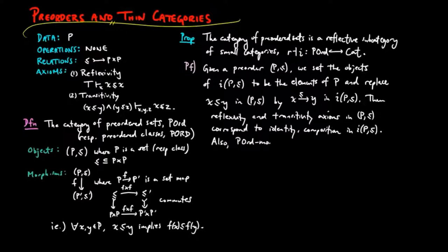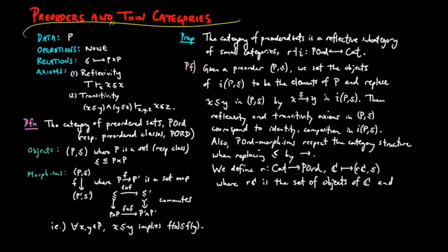Also, the pre-ordered morphisms respect the category structure when replacing the relations by morphisms. We define the reflector R where RC is a set of objects in C and x is defined to be less than or equal to y if and only if there is a morphism from x to y.